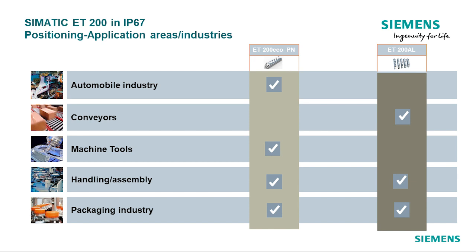The ET200AL, on the other hand, is lightweight, designed for a distributed layout, has almost as wide a temperature range, and is a lot lighter. It is designed for applications that require lightweight I/O products, such as packaging, material handling, robotics, and conveyors.